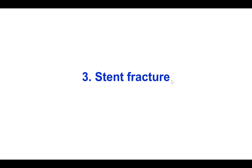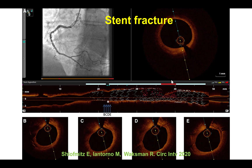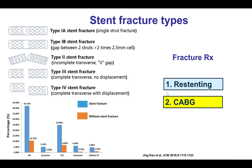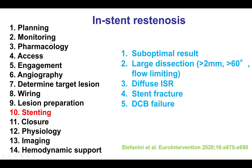Moving on to stent fracture — stent fracture is typically treated by placing another drug-eluting stent, although if there is recurrent stent fracture, coronary bypass graft surgery may be required. There are different types of stent fracture, some more pronounced and some less pronounced.